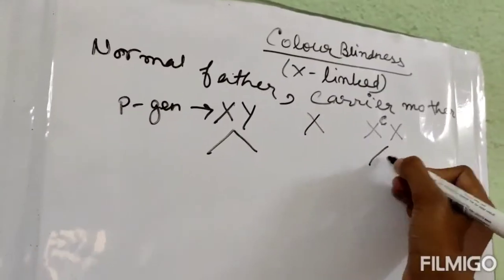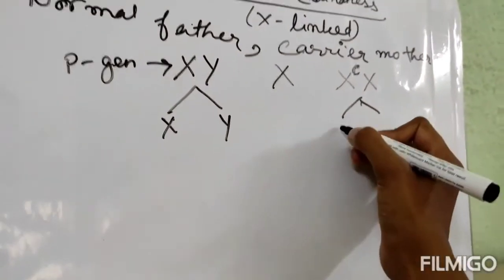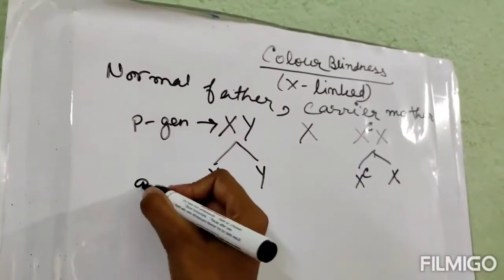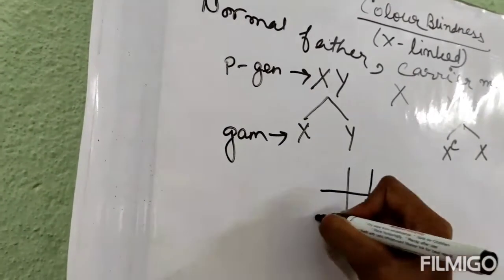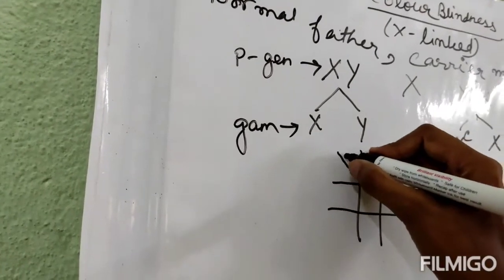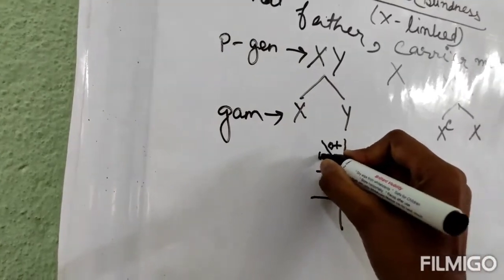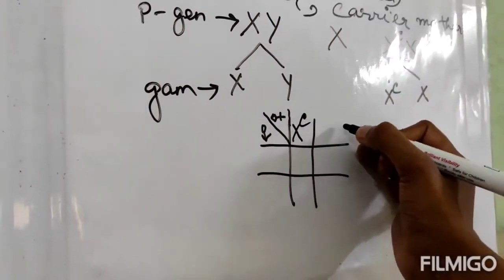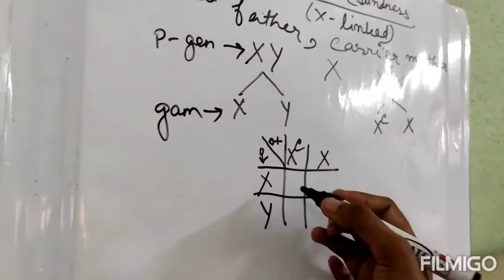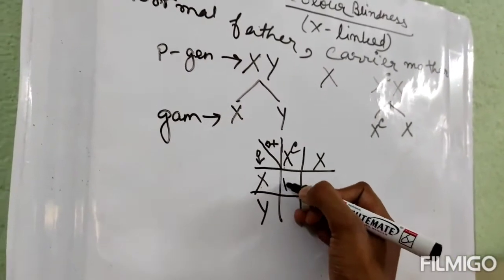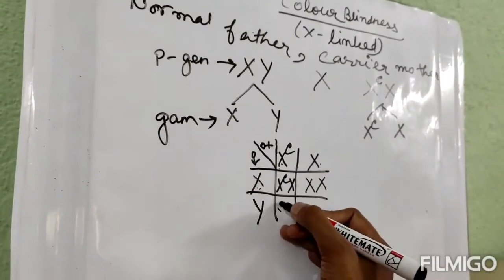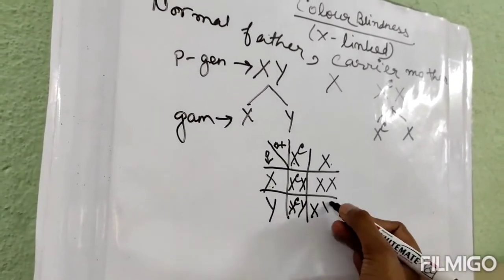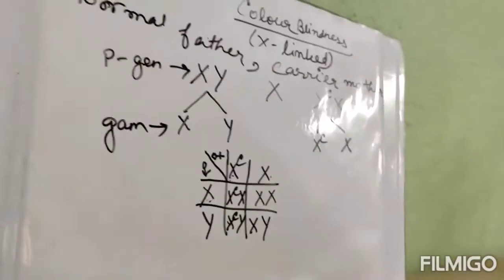These parents will form gametes. From the father we get X and Y; from the carrier mother we get X^C and X. Now we do the checkerboard to get the probabilities of offspring. The X from the father is multiplied with both gametes from the mother, giving X^C-X and X-X. The Y from the father multiplied with both gives X^C-Y and X-Y.